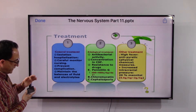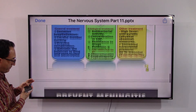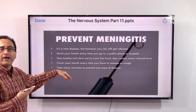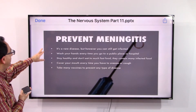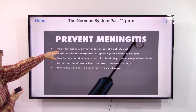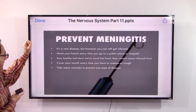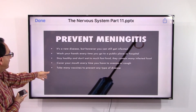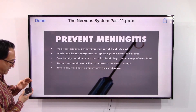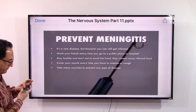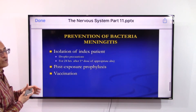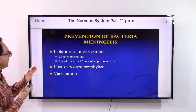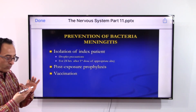Now, this may sound like coronavirus but we are not talking about that — we are talking about how to prevent inflammation of the meninges. So cover your mouth, stay healthy, wash your hands, and take vaccines to prevent the disease. Those are some preventative measures that can be taken.